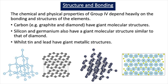The chemical and physical properties of group 4 depend heavily on the bonding and structures of the elements. Carbon exists as allotropes — different structural forms. For example, graphite and diamond are both allotropes of carbon, and these have giant molecular structures. The properties of graphite and diamond depend heavily on these giant molecular structures. Silicon and germanium also have giant molecular structures similar to diamond, whilst tin and lead have giant metallic structures consisting of metallic bonding.